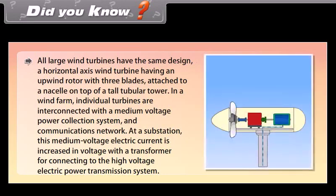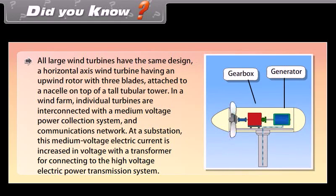Did you know? All large wind turbines have the same design — a horizontal axis wind turbine with an upwind rotor with three blades, attached to a nacelle on top of a tall tubular tower. In a wind farm, individual turbines are interconnected with a medium voltage power collection system and communications network. At a substation, this medium voltage electric current is increased in voltage with a transformer for connecting to the high voltage electric power transmission system.